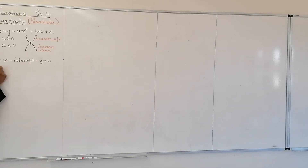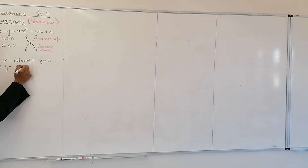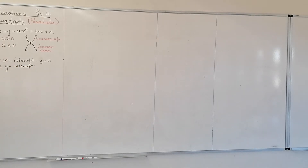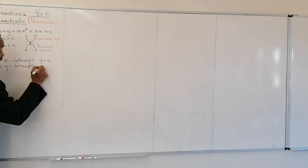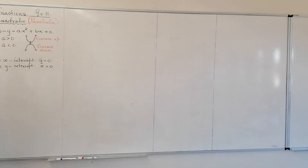You must also know the y-intercept. The y-intercept is the point that lies on the y-axis. The equation for the y-axis is x equals zero, meaning everywhere on the y-axis the value of x is zero. These three things — shape, x-intercept, and y-intercept — are very important.